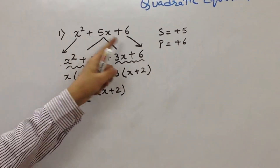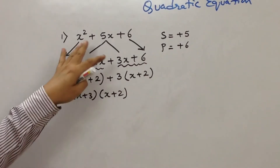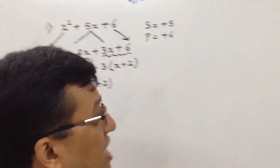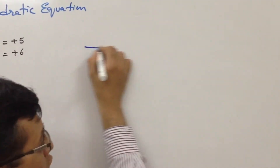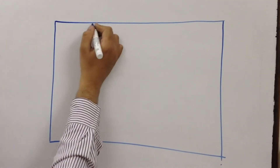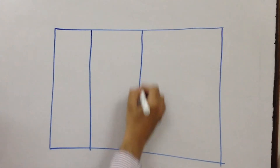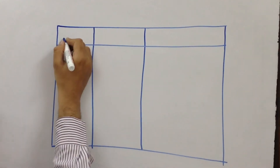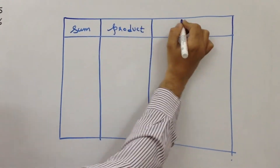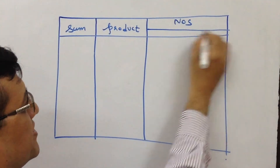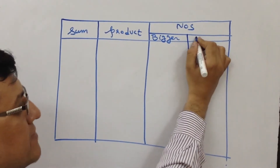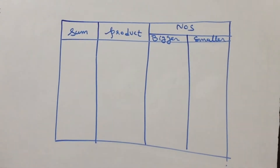This sum is quite easy as the factors work out easily. But students find it a bit difficult when the signs keep on changing — they get minus here, minus there, or both minus. So there is a table I shall give you, in which we work out all the probable outcomes — how many types of sums exist. I draw three columns: sum, product, and numbers, where I bifurcate numbers into a bigger number and a smaller number.